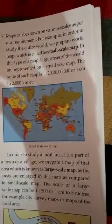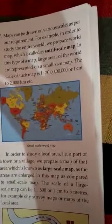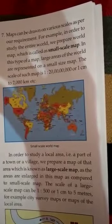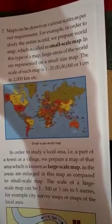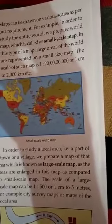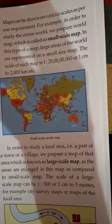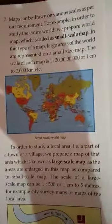One more thing: maps can be drawn on various scales as per the study required — whether of the entire world or a small area. There are actually two types of maps: one is called a small-scale map and the other is called a large-scale map. In the next class, we will talk about small-scale maps and large-scale maps.